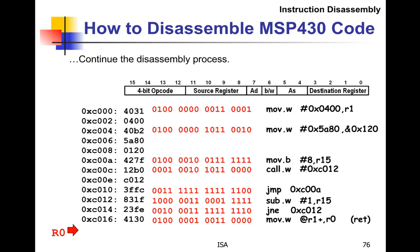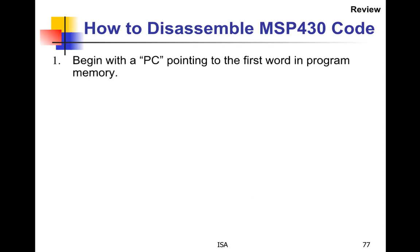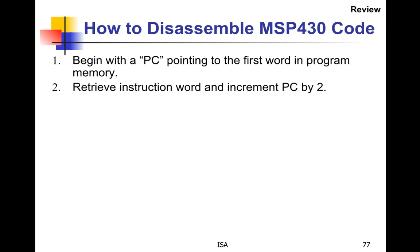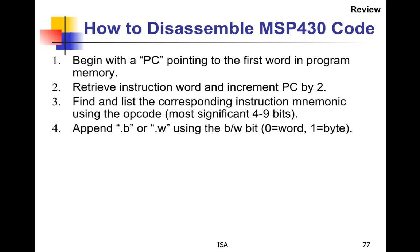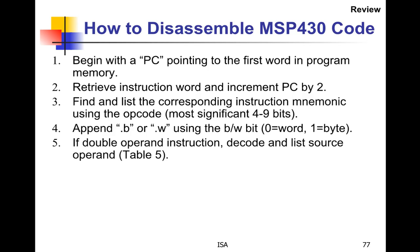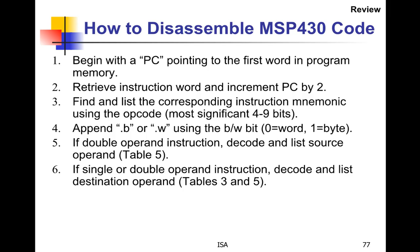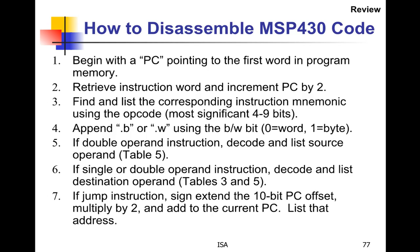That's how you disassemble instructions in MSP430 code. Here's a summary: begin with the PC pointing to the first word in the program, retrieve the instruction, increment the PC by 2, find and list the corresponding mnemonic using the opcode table — checking 4 to 9 most significant bits depending on the instruction type — append .B or .W, decode the source operand for double-operand instructions, decode the destination operand, and for jump instructions extend the 10-bit offset, multiply by 2, and add the current PC to get the target address.